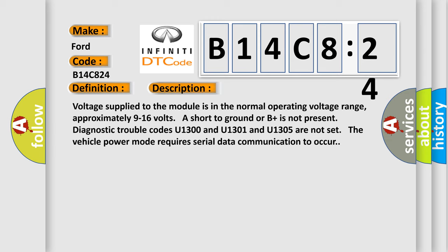The basic definition is Lost Communication with XXX. And now this is a short description of this DTC code: Voltage supply to the module is in the normal operating voltage range. Approximately 9 to 16 volts are short to ground or B plus is not present. Diagnostic trouble codes U1300 and U1301 and U1305 are not set. The vehicle power mode requires serial data communication to occur.